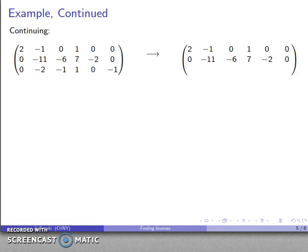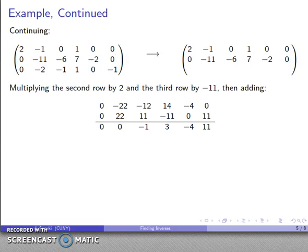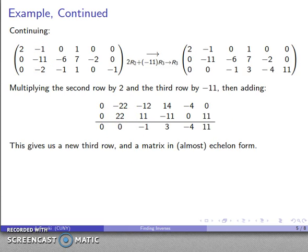Now I'll continue. I want to get this third row, so I'll take that second row and multiply it by 2. I'll take the third row, multiply by -11, and that will line up my coefficients and I'll get my new third row.